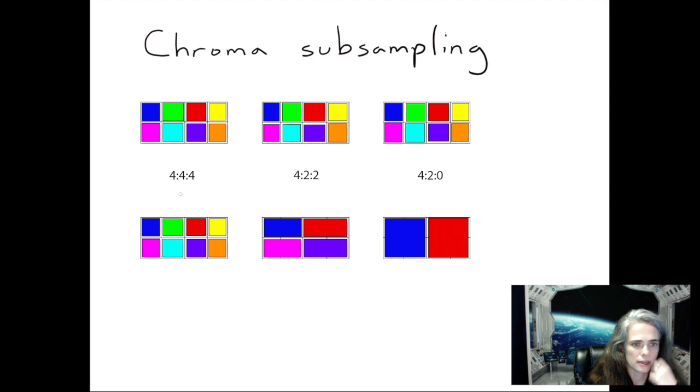If we take a look at the diagram, I have three versions of chroma subsampling set up for you: 4:4:4, 4:2:2, and 4:2:0.